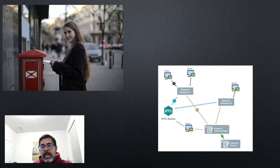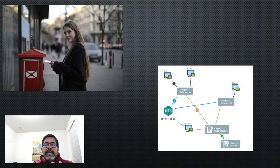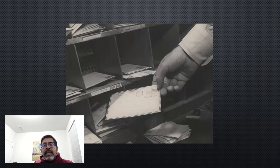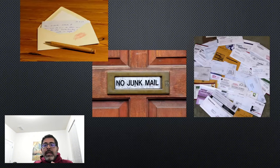People drop off letters at the post office and those letters have to be sent to different houses in your town. In the computer world, these letters are like messages or requests sent to different parts of a computer system. Spring Cloud Gateway is like a super-fast sorting machine — it looks at each letter, reads the address on it, which is like the digital address of a computer service, and then magically sends it to the right destination.